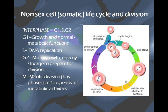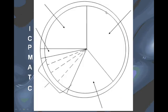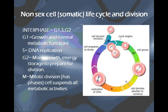Normal metabolic functions just means that the cell is doing its normal cell thing — whatever that cell should be doing. The second stage, after G1, is DNA replication. DNA replication is when a cell makes a copy of its DNA. DNA replication is shown on this pie piece here. That's called the S stage. S stands for synthesis because more DNA is being synthesized.